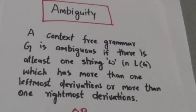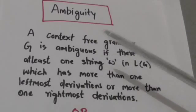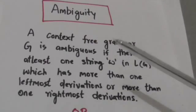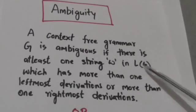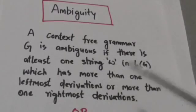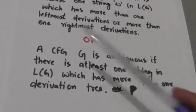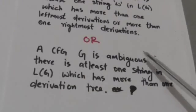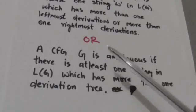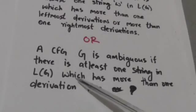Hello friends, welcome back. In this tutorial we will study about ambiguity. A context-free grammar G is ambiguous if there is at least one string W in the language of grammar G which has more than one leftmost derivations or more than one rightmost derivations. In simple words, a context-free grammar G is ambiguous if there is at least one string in its language which has more than one derivation tree.